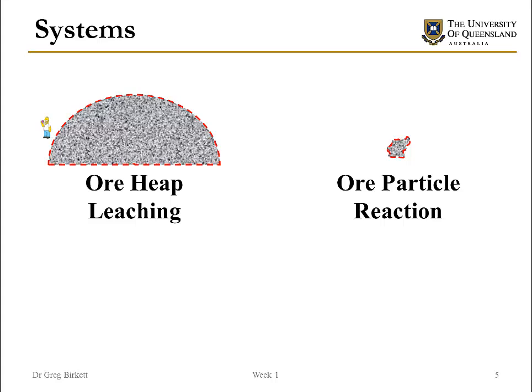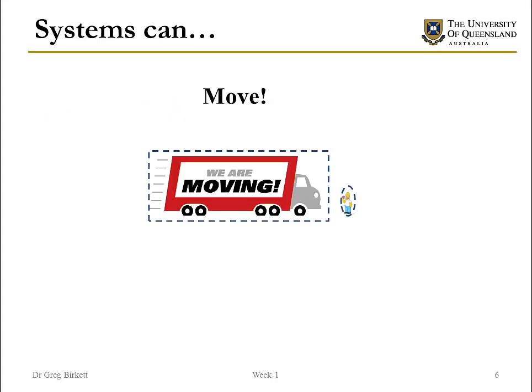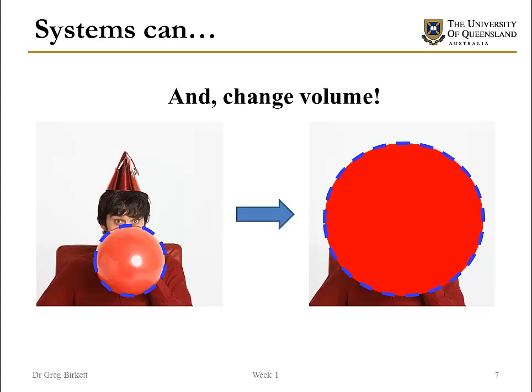So the system and the definitions of the boundaries of the system are completely up to you. Not only can we define what the boundaries are, we also have the freedom to allow our systems to do many things. A system can move — we could be interested in a truck or an airplane. A system can also change volume. If this helps us solve what we're interested in solving, then we're allowed to define this for the system. A system is a construct that we use to enable us to model something.